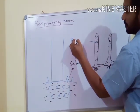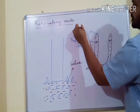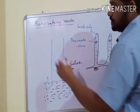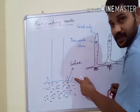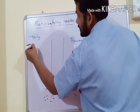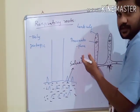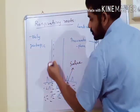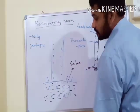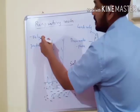Respiratory Roots are called pneumatophores. They also contain lentils. Respiratory Roots are aerial, upright, and negatively geotrophic roots. Negatively geotrophic means they grow towards the light, which is opposite to the normal root growth direction. Normal root growth is positively geotrophic — towards the soil — but respiratory roots grow away from the soil, towards light.